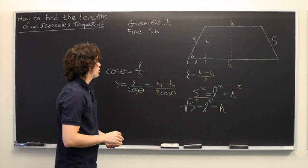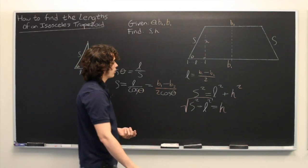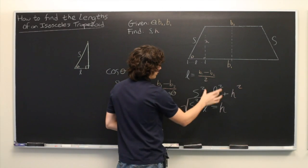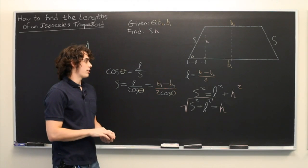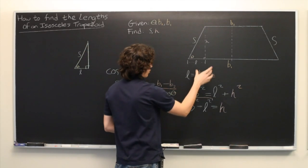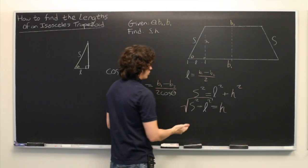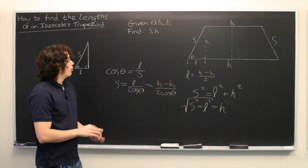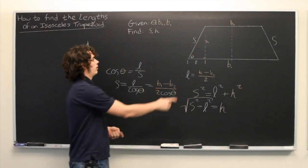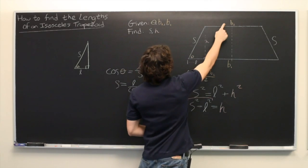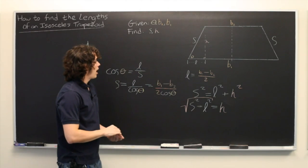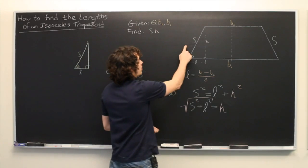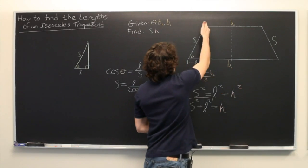And once again, you can simplify this further if you take this formula for L and plug it in here, which might not look like simplification because then you have to square this term. So we'll leave it in this form for now, which is the nicest looking. But here we've shown how you can take one angle and the two bases of an isosceles trapezoid and use that information to determine the lengths of the remaining sides and the height.